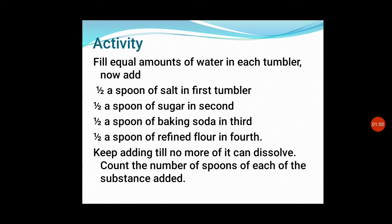Now add half a spoon of salt in the first tumbler, half a spoon of sugar in the second, half a spoon of baking soda in the third, and half a spoon of refined flour in the fourth. Keep adding till no more of it can dissolve. That means you have to make a saturated solution again. Count the number of spoons of each substance added.